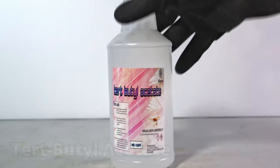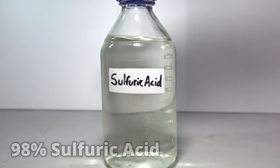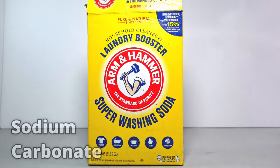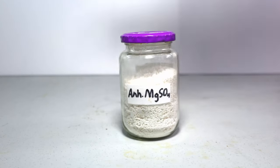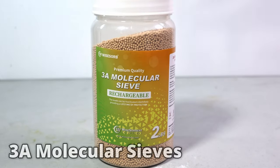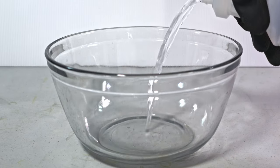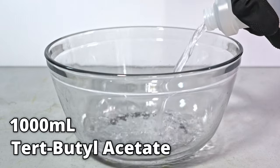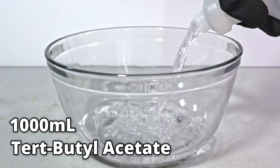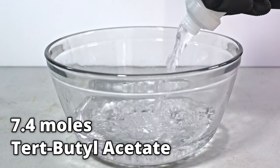The materials you need are tert-butyl acetate, sulfuric acid, sodium carbonate, anhydrous magnesium sulfate, and molecular sieves. The first thing I'm going to do is dump in a whole liter of tert-butyl acetate. This is roughly 7.4 moles of tert-butyl acetate.